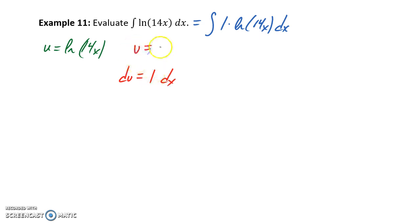Integrating 1 with respect to x will give us x, and then differentiating the u statement will give us du over dx is equal to 1 over 14x, times the derivative of 14x, so times the derivative of that interior function. So we'll get du is going to be equal to 14 over 14x dx, or the 14s would just cancel, giving us 1 over x dx.